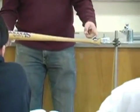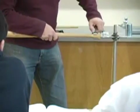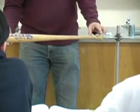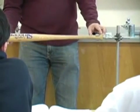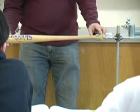I have the bat pivoted about the end point. So what should its moment of inertia be about the pivot point? One-third ml squared, right? One-third ml squared.